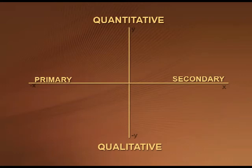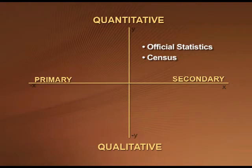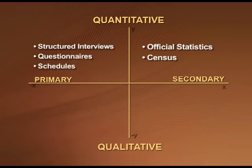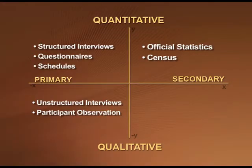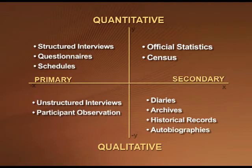Going anti-clockwise: quantitative and secondary data includes official statistics and census. Quantitative and primary data is collected through structured interviews, questionnaires, and schedules. Primary and qualitative data is gathered through unstructured interviews and participant observation. Finally, qualitative and secondary data exists in the form of diaries, archives, historical records, and autobiographies.